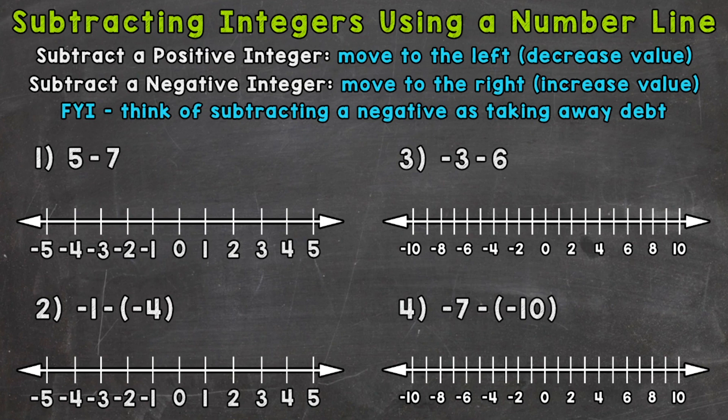Let's jump into number one, where we have five minus seven. We start at a positive five and we take away a positive seven. We are going to decrease in value — we are subtracting a positive integer, so we need to move to the left. We'll start at positive five and we need to subtract seven, so seven to the left.